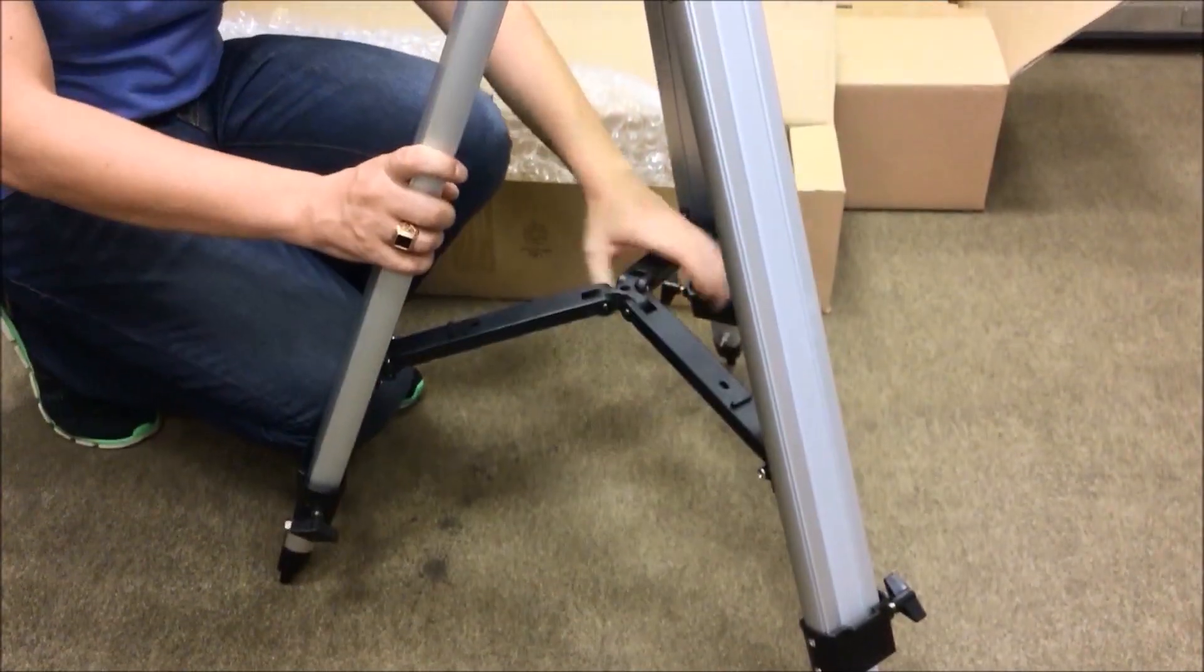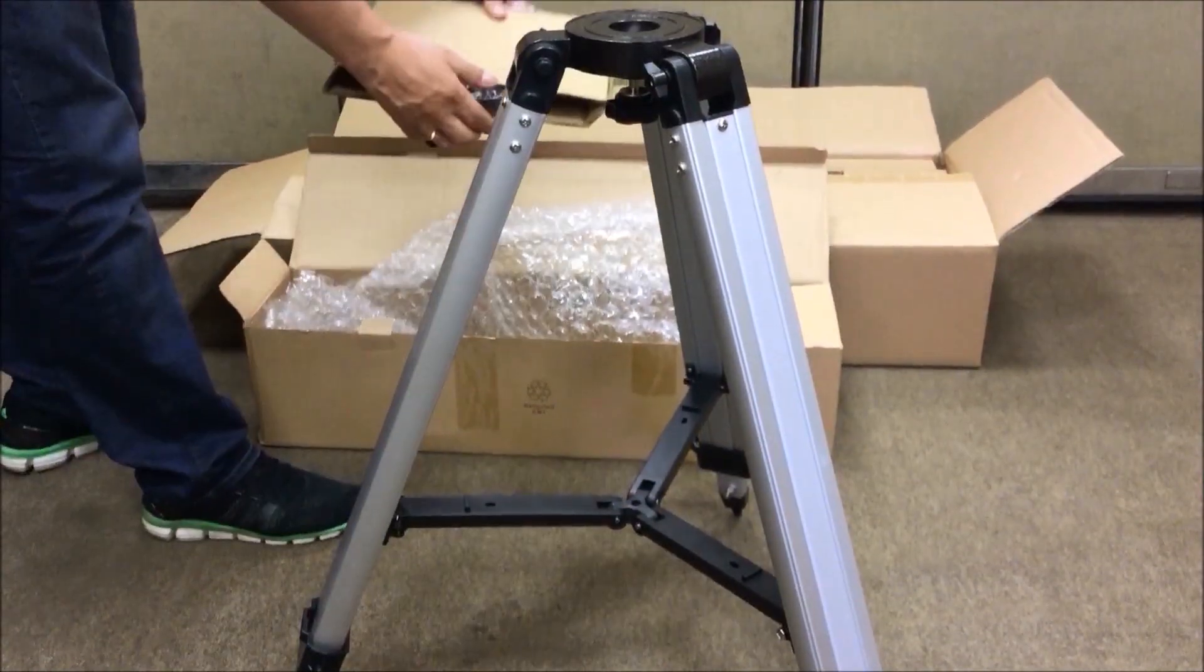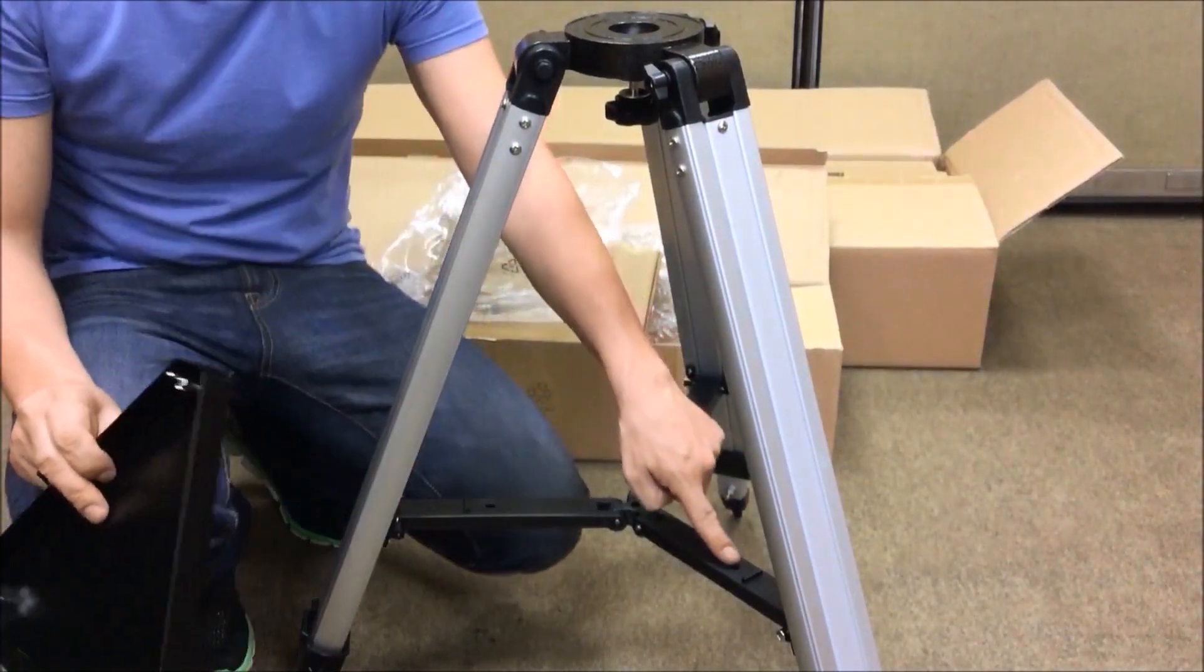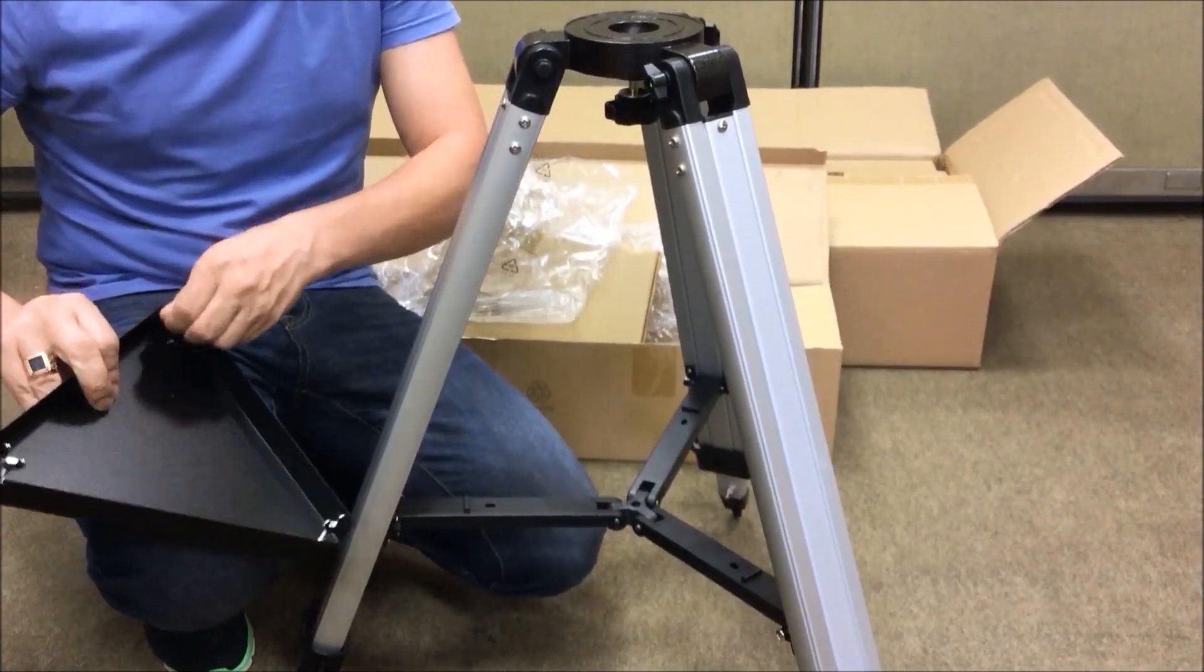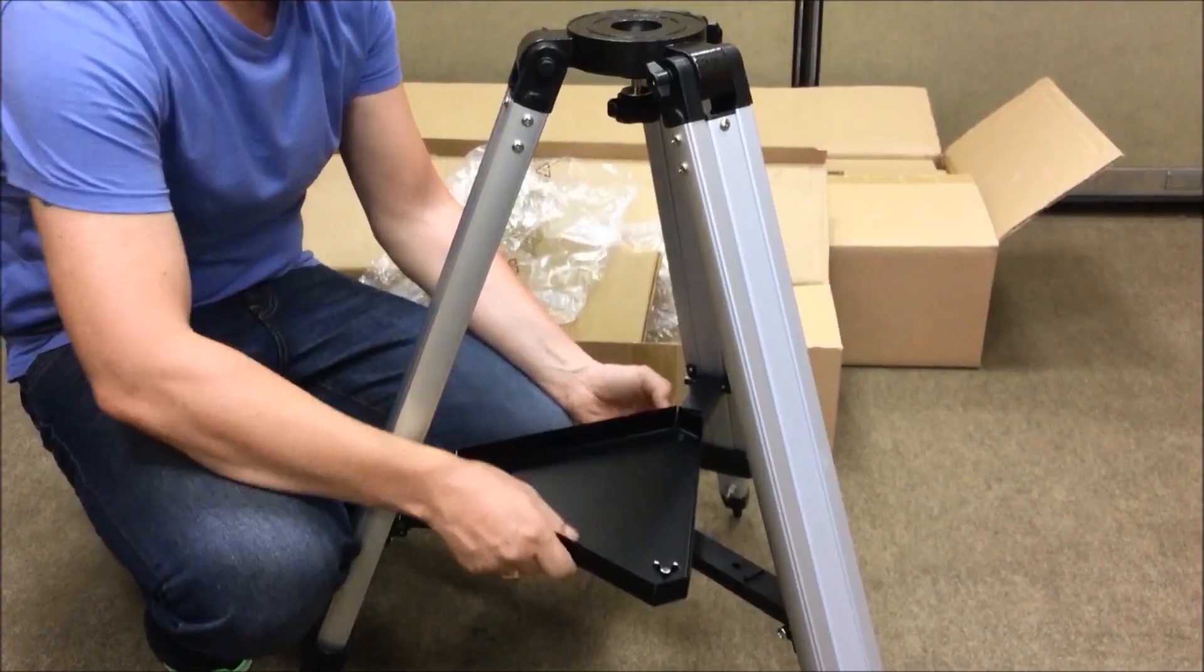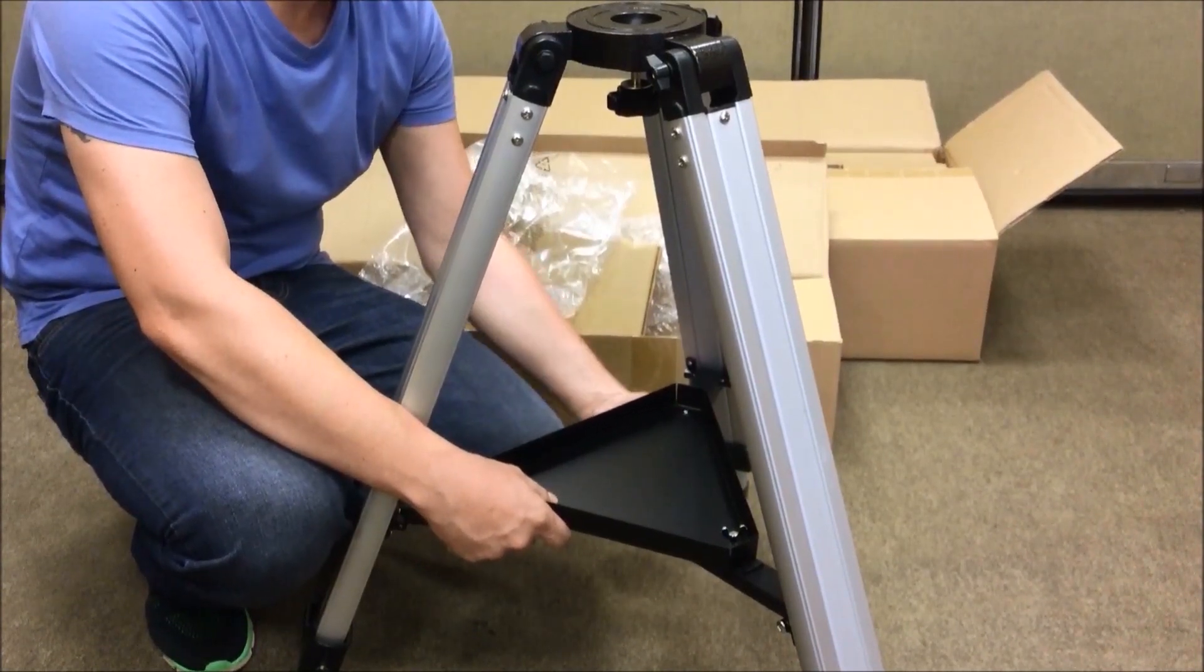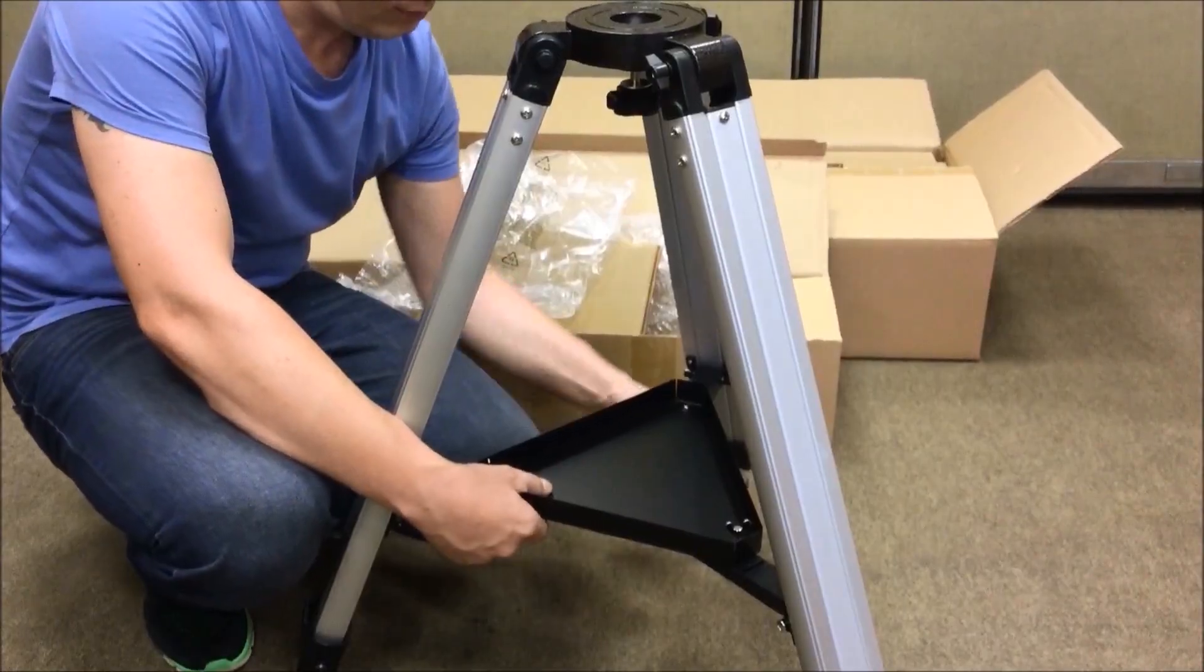Now we need to stand the tripod on a stable flat surface and install the accessory tray, which comes in the same box as the tripod. The tray is attached to these notches using the screws on the tray. We need to locate the tray so its openings are aligned with the notches. Now we put one thumb screw from underneath and tighten it. Right now we will secure only one corner of the tray.